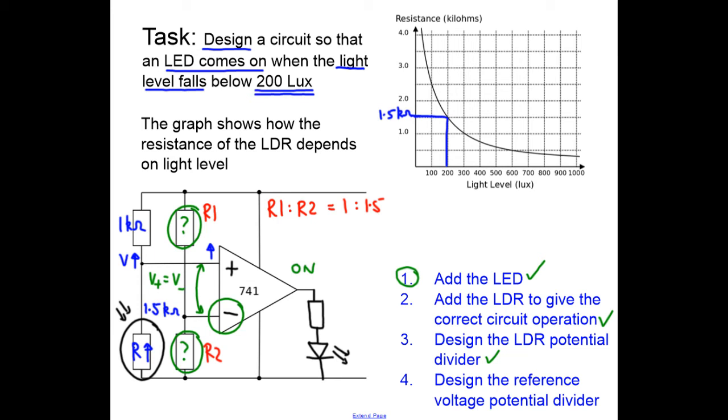What I'm going to actually choose is a hundred kiloohms and a hundred and fifty kiloohms, and they are now in the right ratio. So if I label this as a hundred kiloohms and I label this as a hundred and fifty kiloohms.